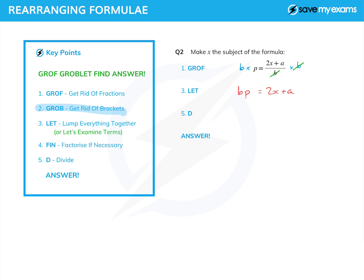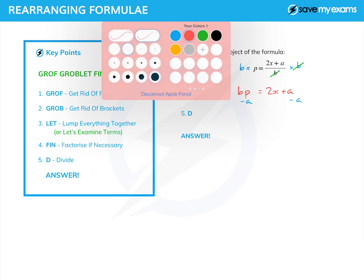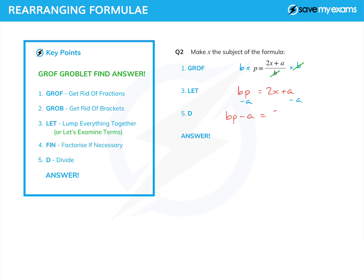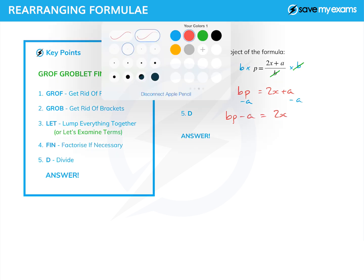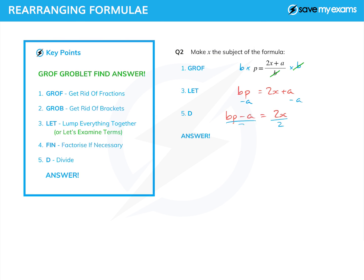There are no brackets, so we can miss out step two. We go straight on to step three, which is lumping everything together. Looking at the terms here, I've got a term with x in it which I can just leave where it is, and I've got terms with a and bp — with no x's in them. So let's put those all on one side by subtracting a from both sides. That gives me bp minus a on the left, and just the 2x on the right. Now I divide. I've got 2x and I only want 1x, so I divide both sides by 2. The 2s on the right cancel, and I can write down my answer: x is equal to (bp minus a) over 2.